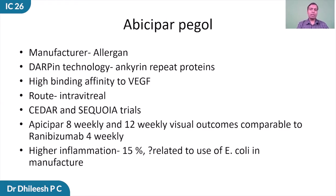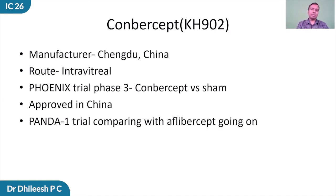Abicipar pegol, manufactured by Allergan, uses DARPin technology, or designed ankyrin repeat proteins, with high binding affinity to VEGF. In the Cedar and Sequoia trials, abicipar 8-weekly and 12-weekly delivered visual outcomes similar to ranibizumab 4-weekly regimen; however, it also had a higher inflammation rate probably related to the use of E. coli in manufacture. Another anti-VEGF is Conbercept from Chengdu Pharmaceuticals in China; in the Phoenix trial phase 3, it was compared to a sham injection and approved for use in China, and the PANDA-1 trial is currently comparing it with aflibercept.